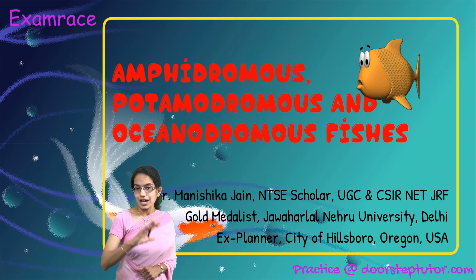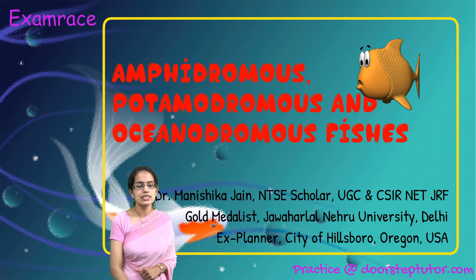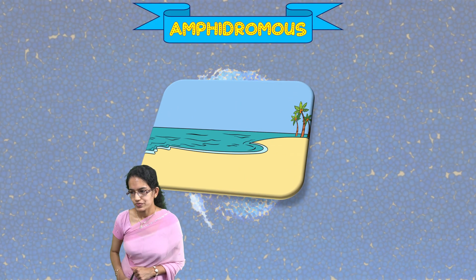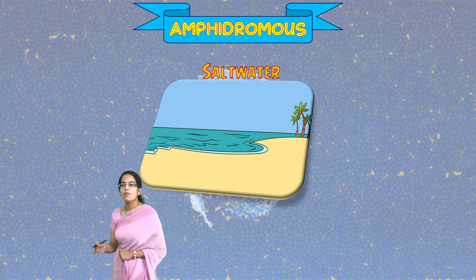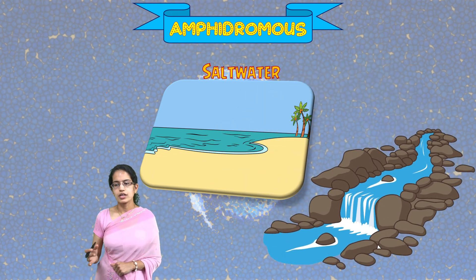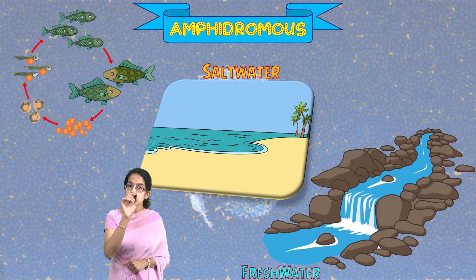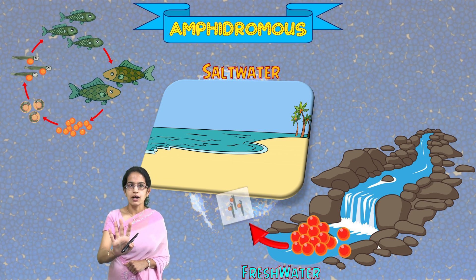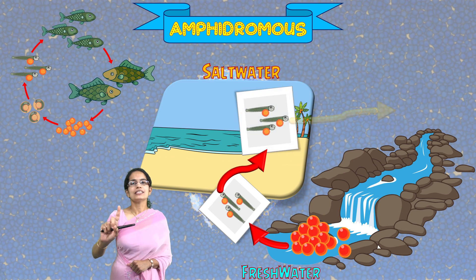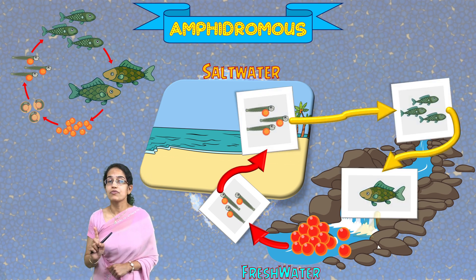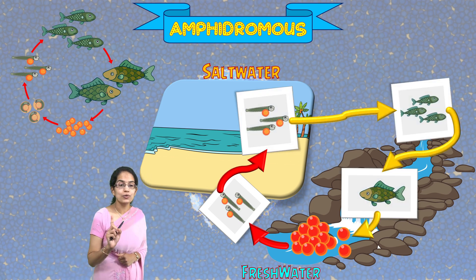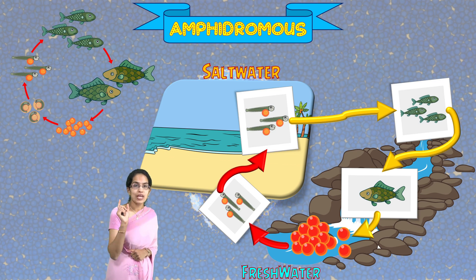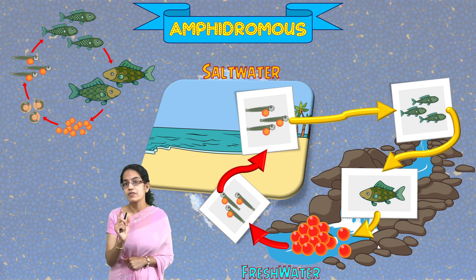The other three important categories are Amphidromus, Potimidromus, and Oceanodromus. Amphidromus is really interesting — these fishes are born in fresh water or estuaries, move into sea water only as larvae, and as soon as the larval stage is completed, they move back to fresh water. Only the larval stage is seen in salt water.